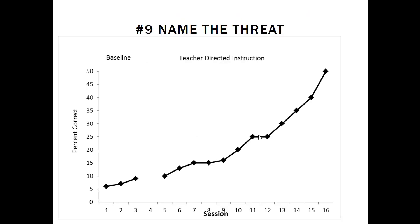Graph number nine — name the threat. We've got a couple of things going on. One is that our baseline data has an accelerating trend — we don't have stability here, so this would be data instability. We introduced the intervention and see an acceleration in the data path. It could be that there are some facilitative effects of testing, or it could be adaptation. At least three potential threats to internal validity are visible on graph number nine.